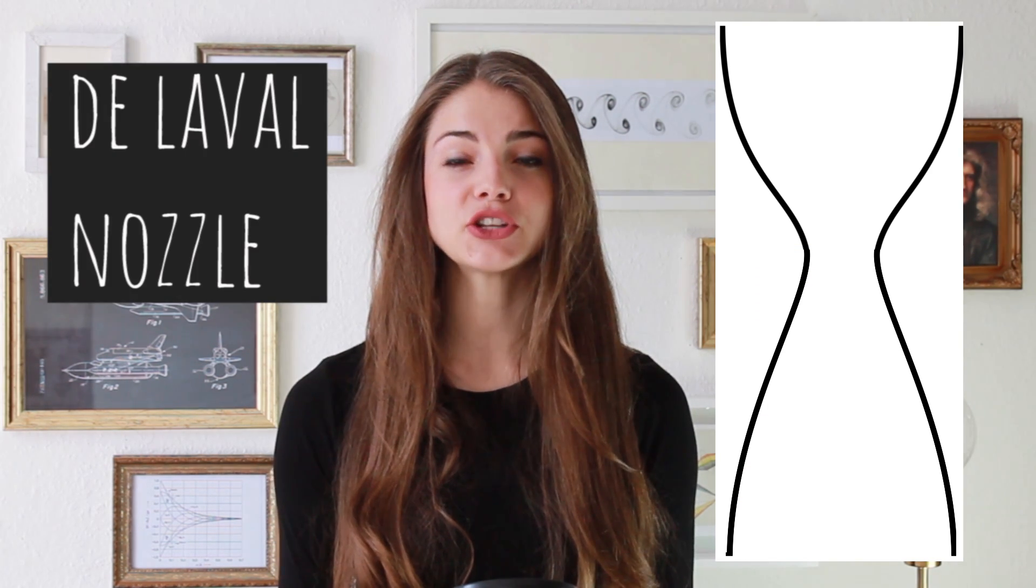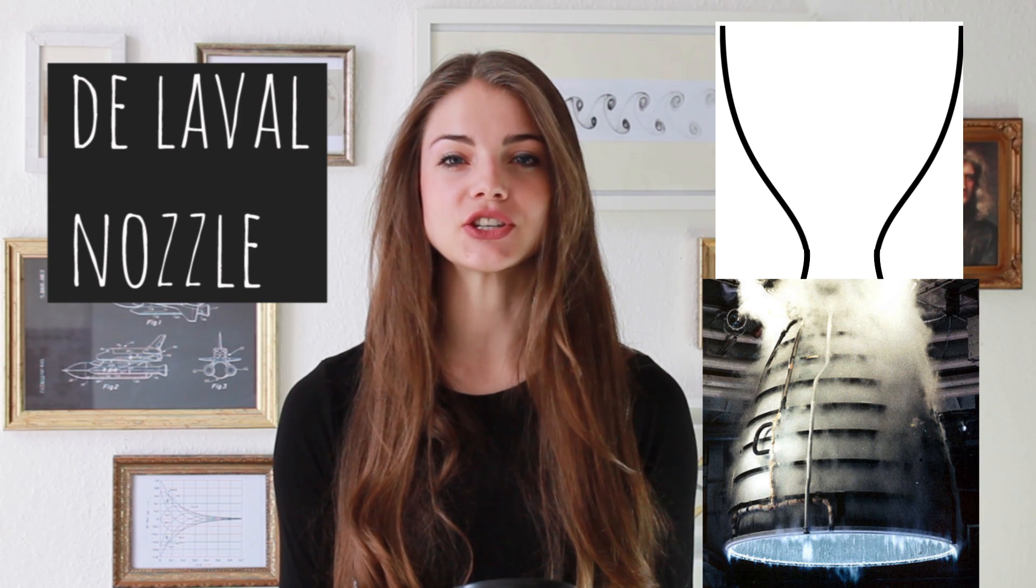This means that a supersonic flow can be created with a pipe that first has a convergent part, and then a divergent one. This kind of setup is called a DeLaval nozzle. And it's used for example for rocket engines.